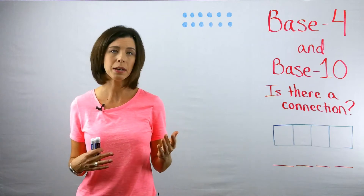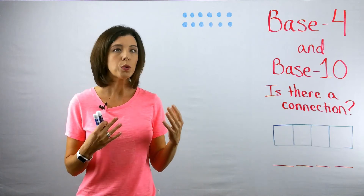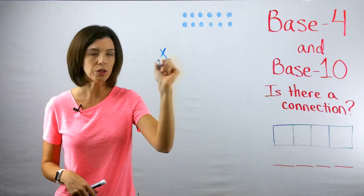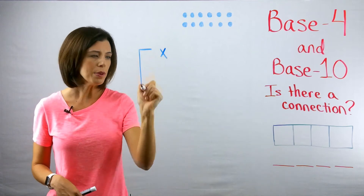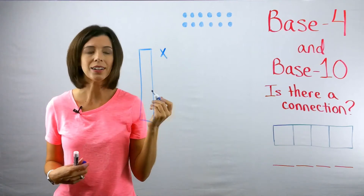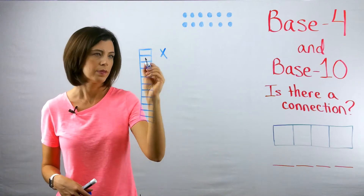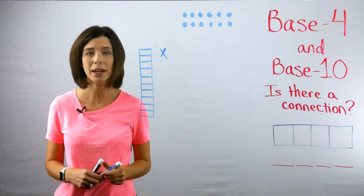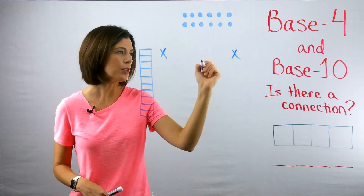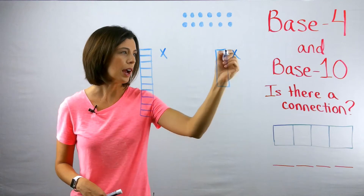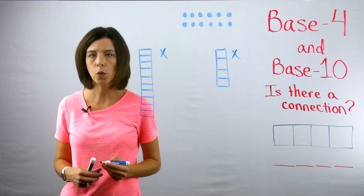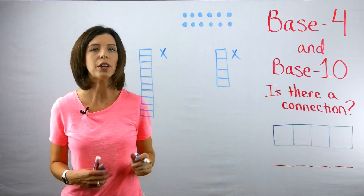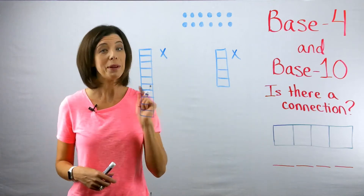The first thing you need to think about is what the groups are in base four. In base 10, we have single units, and then we have a rod — a rod is made up of 10 units. In base four, we don't have a rod made up of 10 anymore; we have a rod made up of four. So we still have units and rods, but our rods only have four in them.